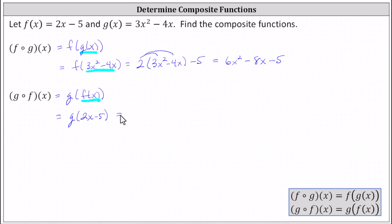Now 2x minus 5 becomes the input into the function g. Since g of x equals 3x squared minus 4x, g of the quantity 2x minus 5 is equal to 3 times the square of 2x minus 5, minus 4 times the quantity 2x minus 5.